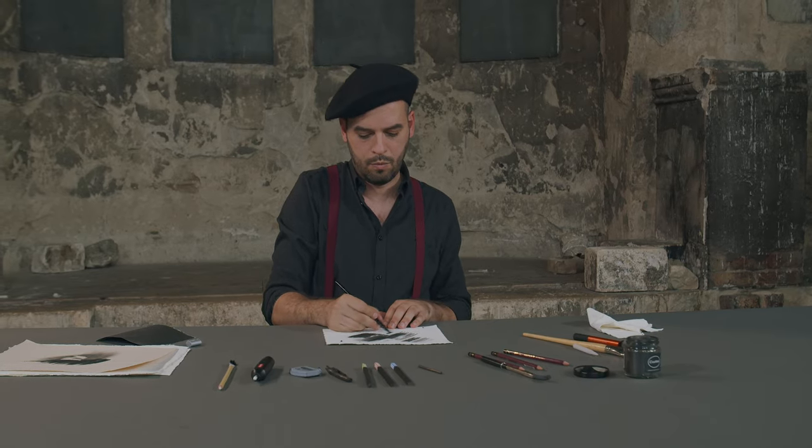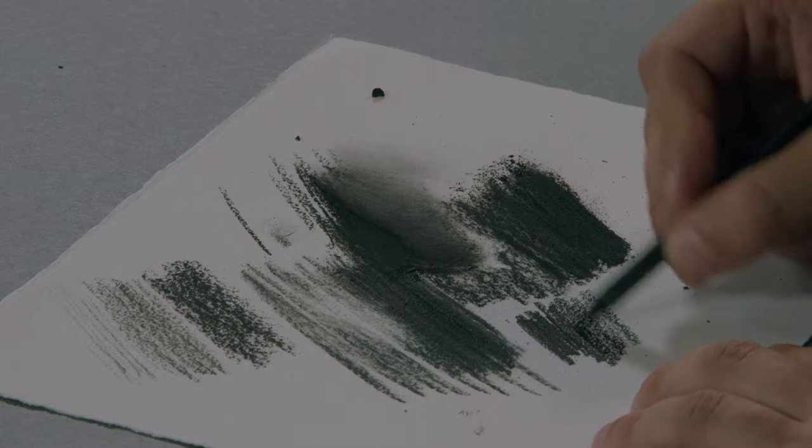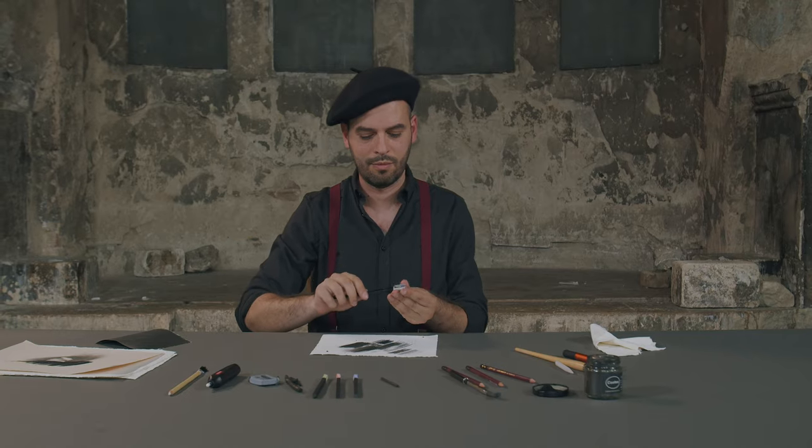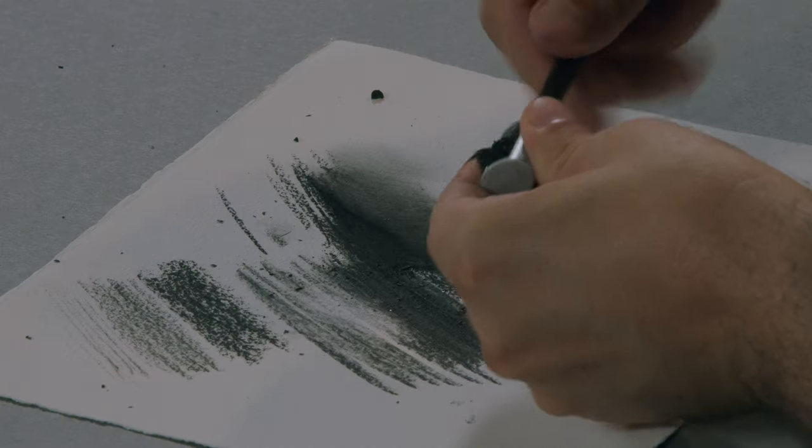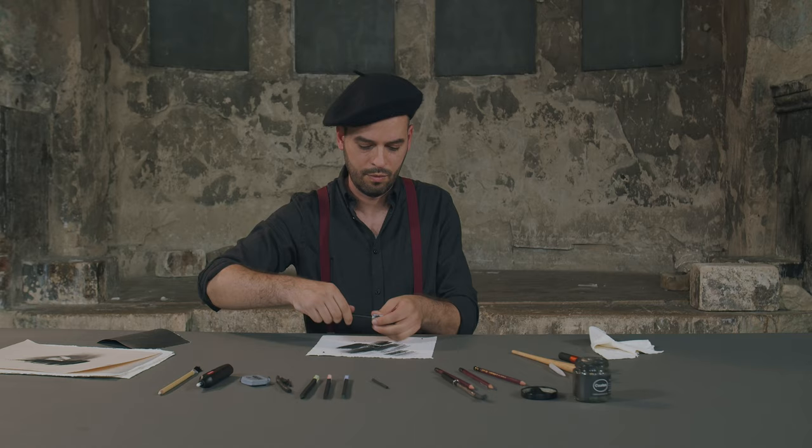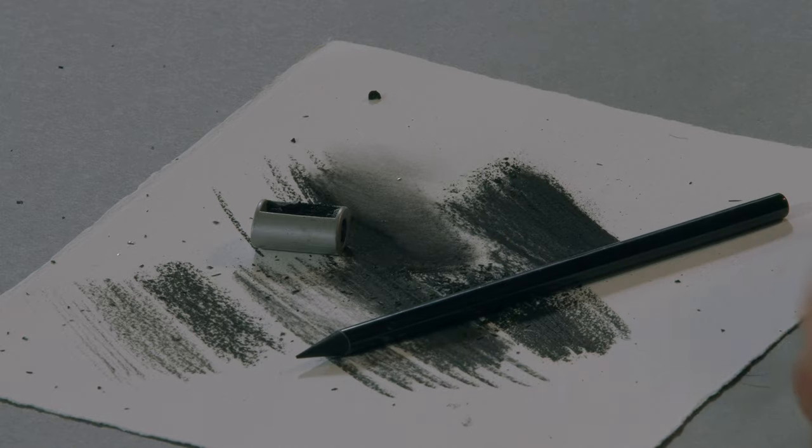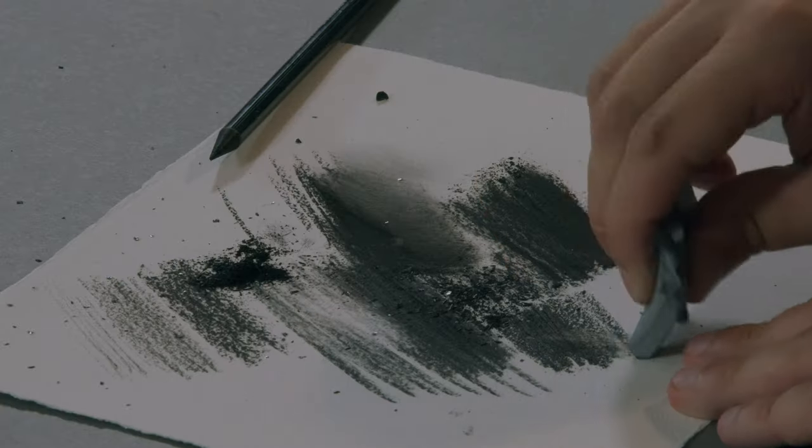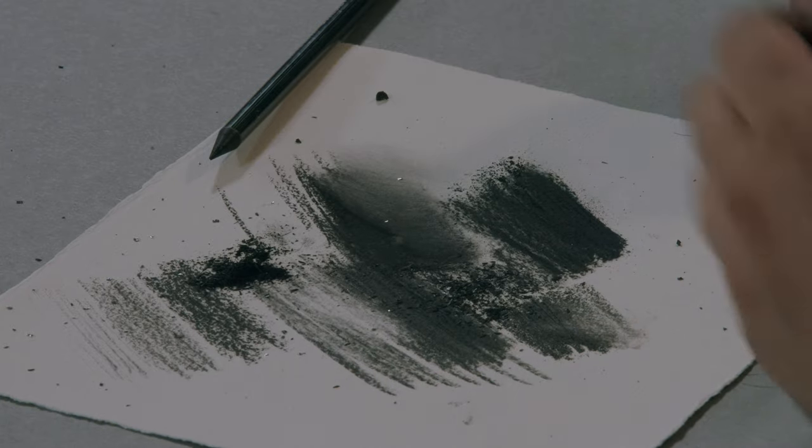Compressed charcoal is made from charred wood dust, to which a binder is added. The sticks can usually be sharpened with a normal pencil sharpener. Compressed charcoals are very difficult to erase and they should be reserved for the darkest accents towards the end of the drawing.